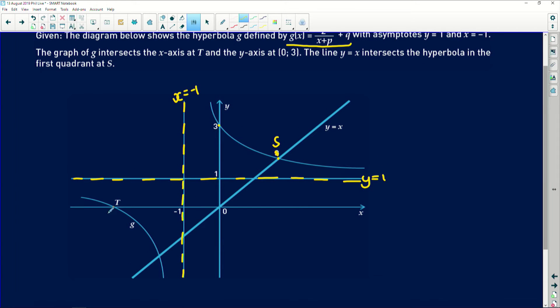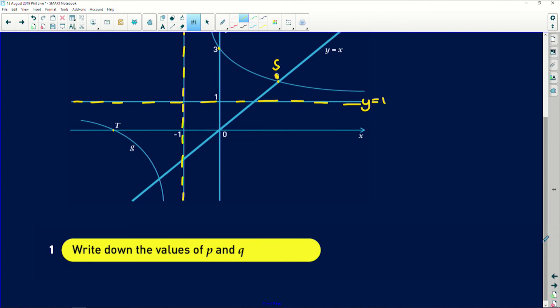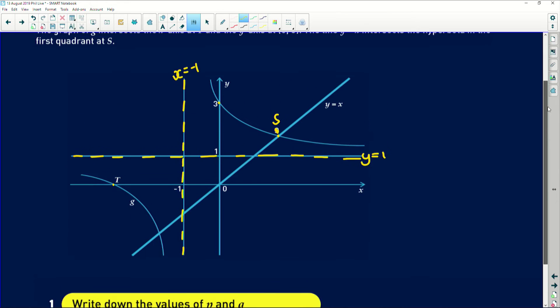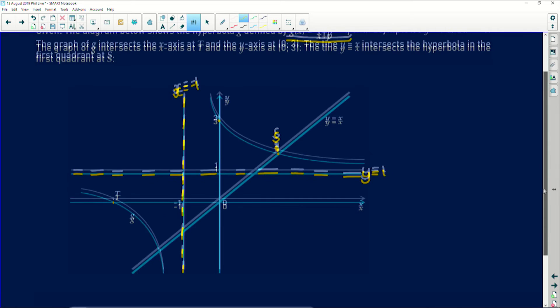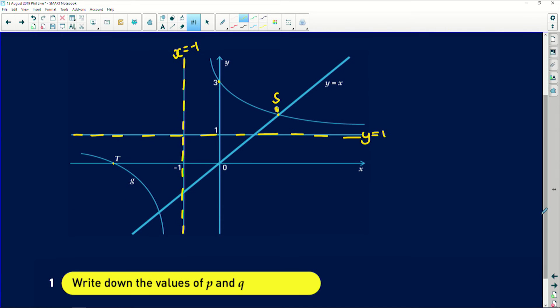First question says write down the values of p and q. If you saw our first question of the day, you know that p and q correspond with the asymptotes because they represent points that the x value will never define a y value for on the function.